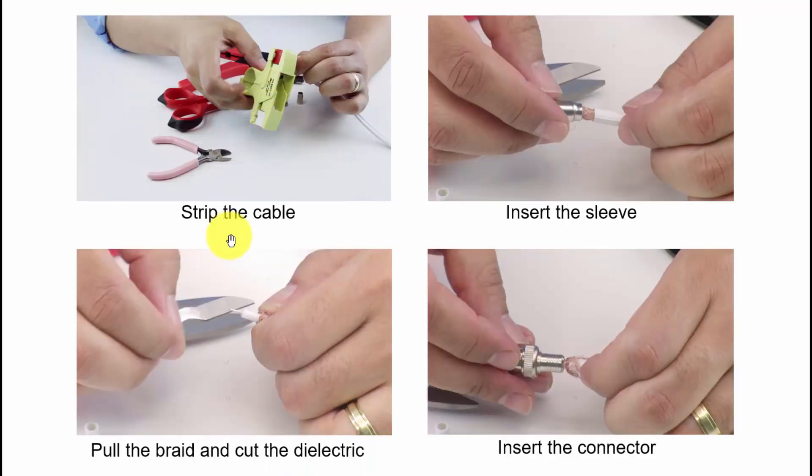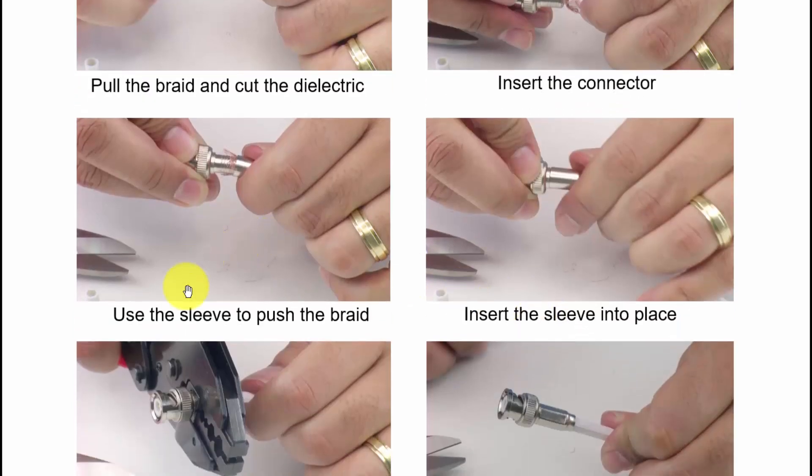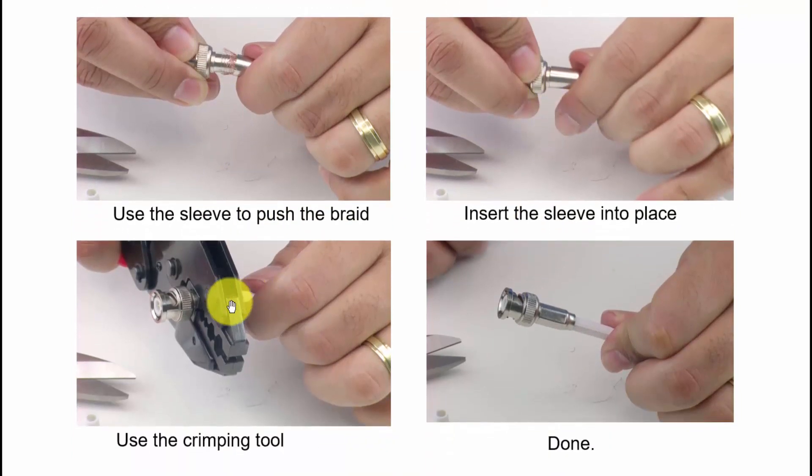So here, a quick recap how to do the connector. Strip the cable, insert the sleeve, and then you pull the braid and the dielectric. Insert the connector, use the sleeve to push the braid in its place and insert the sleeve, and you crimp the cable. It's done, you have your crimped BNC connector. Pretty simple to do that.